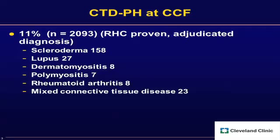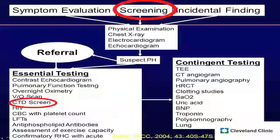I recently looked at connective tissue disease pulmonary hypertension patients here at the Cleveland Clinic — they made up 11% of our 2,000-plus patients with right heart cath-proven pulmonary hypertension and an adjudicated diagnosis. Of those, scleroderma was the lion's share. But we can see PAH in lupus and mixed connective tissue disease, as well as dermatomyositis, polymyositis, rheumatoid arthritis, and Sjögren's syndrome — it is a complication in all of our connective tissue diseases.